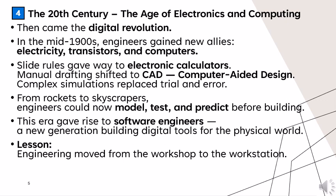The 20th century — the age of electronics and computing. Then came the digital revolution. In the mid-1900s, engineers gained new allies: electricity, transistors, and computers. Slide rules gave way to electronic calculators, and manual drafting shifted to computer-aided design. Complex simulations replaced trial and error. From rockets to skyscrapers, engineers could now model, test, and predict before building. This era gave rise to software engineers — a new generation building digital tools for the physical world. Lesson: engineering moved from the workshop to the workstation.